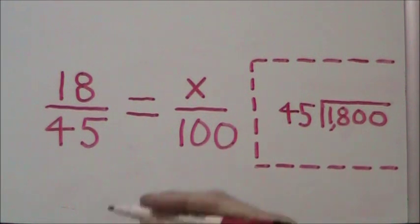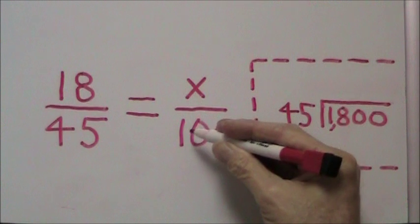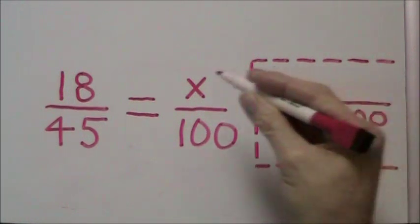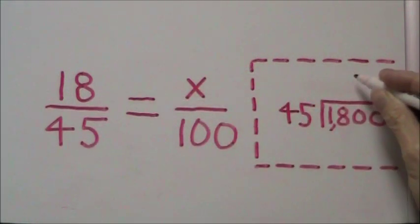Now what we do is cross multiply. 18 times 100 gives us 1800. We divide that by 45 to get our answer of 40.